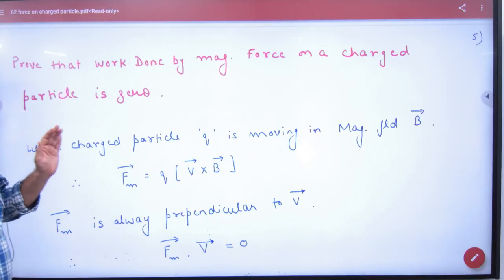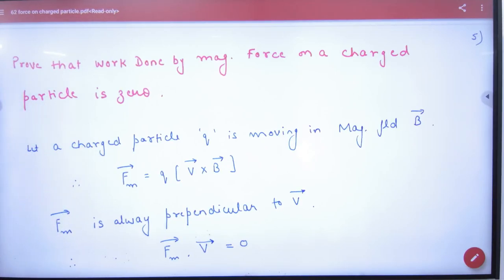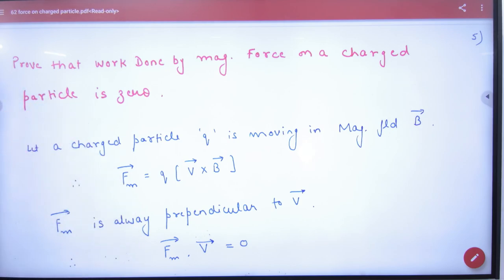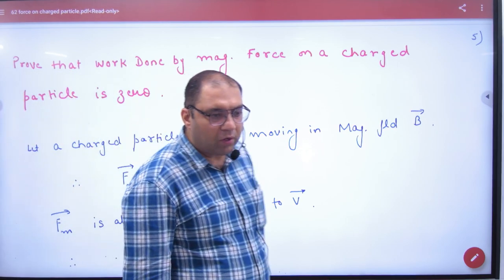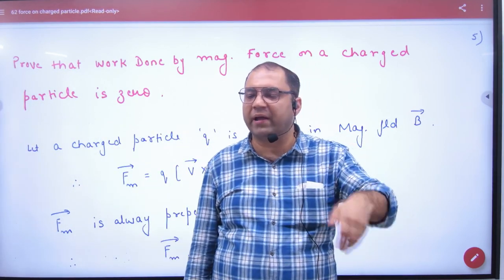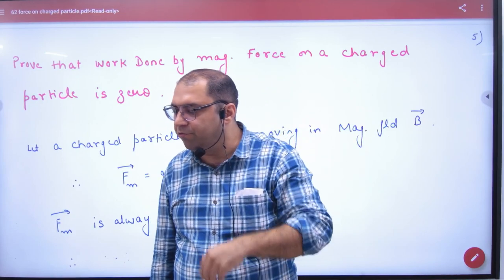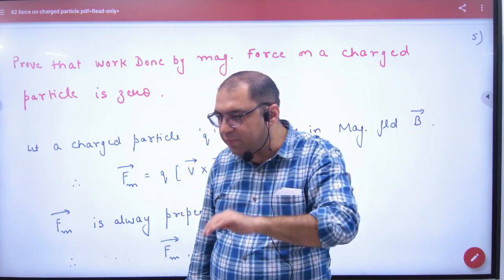Prove that work done by magnetic force on a charged particle is zero. A charged particle is moving in a magnetic field, and the magnetic field exerts a force on it. That force will not do work on the charged particle.